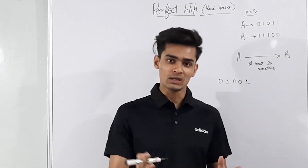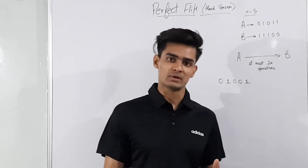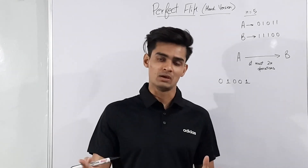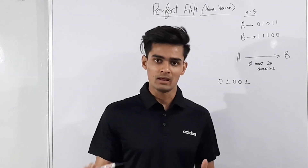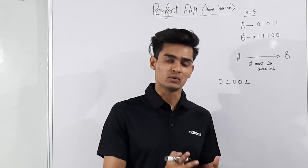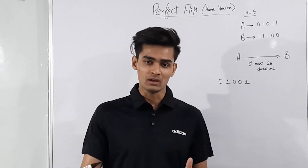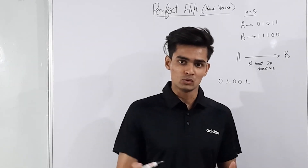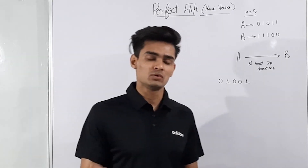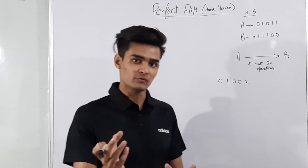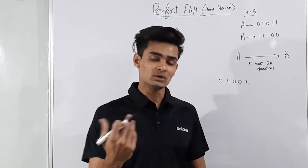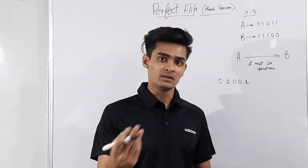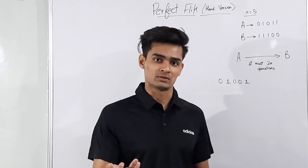We are given two binary strings a and b of length n and we have to convert a to b in at most n operations. In one operation you can take a prefix of a, invert its bits and then reverse the prefix.